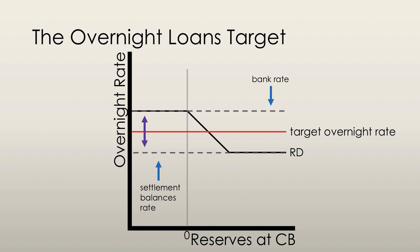This curve is the shape that the demand for reserves curve takes. The line does not go over the bank rate or below the settlement balances rate because no bank would borrow money above the bank rate and no bank would lend money below the settlement balances rate. This is where the zero axis becomes important. If the quantity demanded for reserves is below zero, it is shown graphically as to the left of the zero line — in practical terms, this means the entire banking system is borrowing from the central bank.